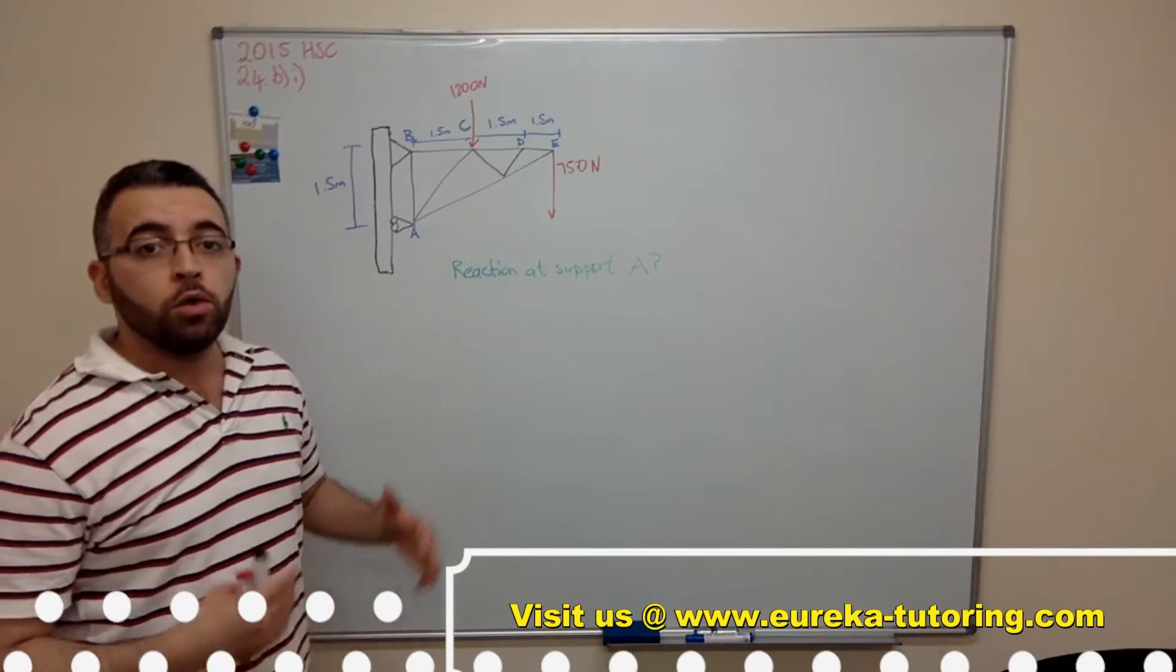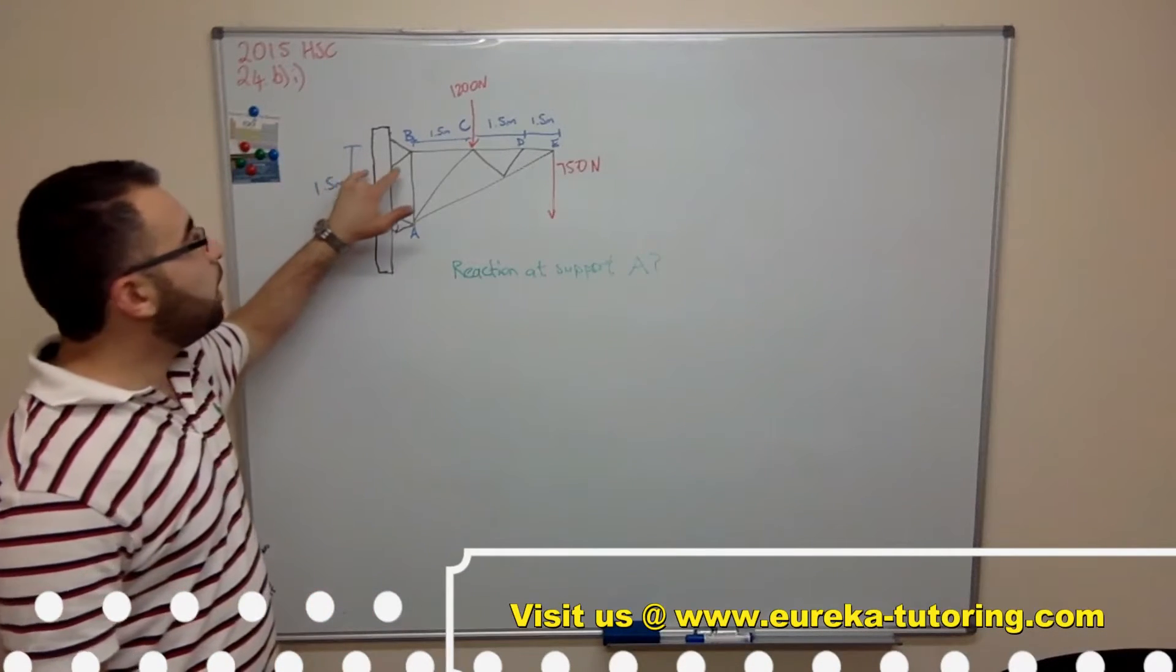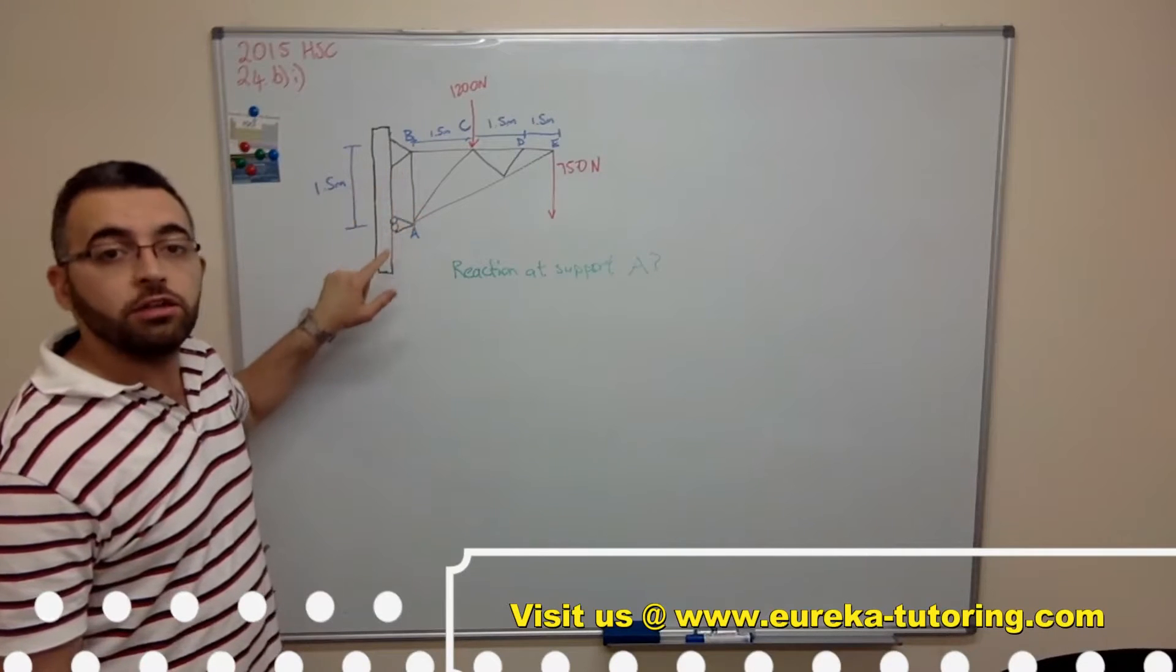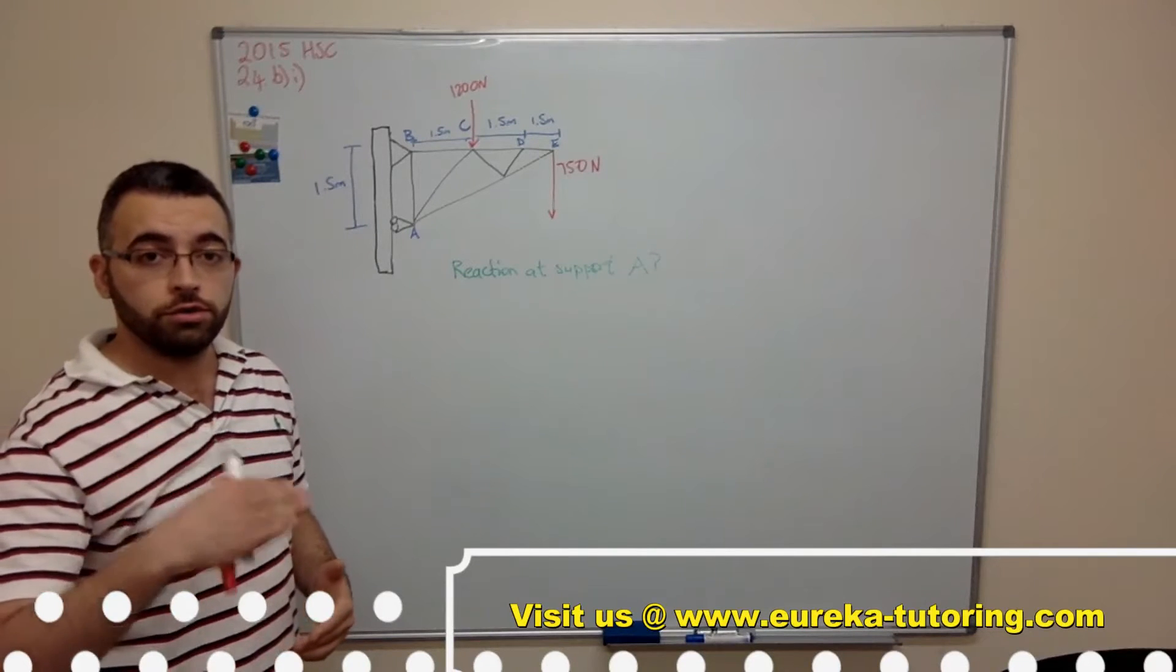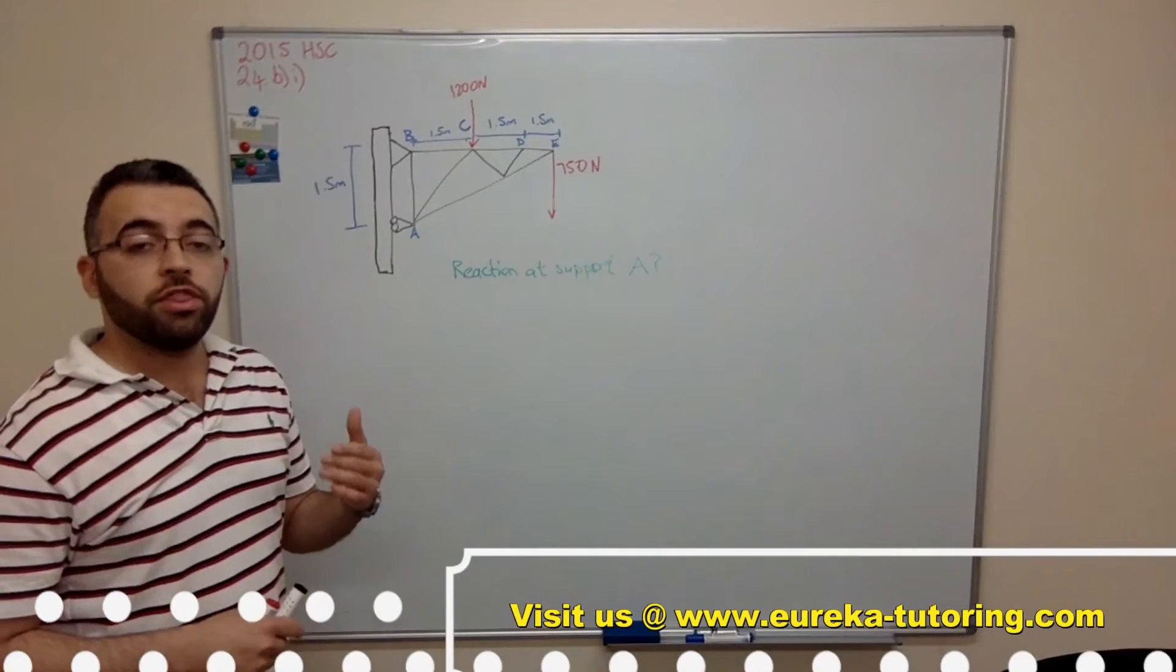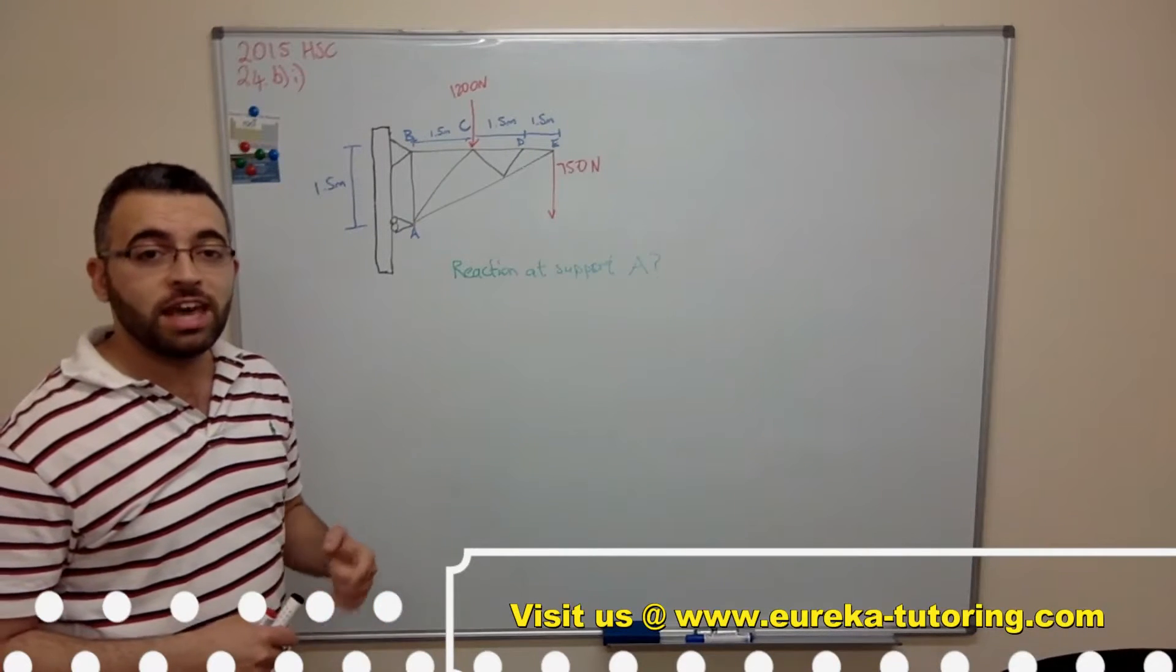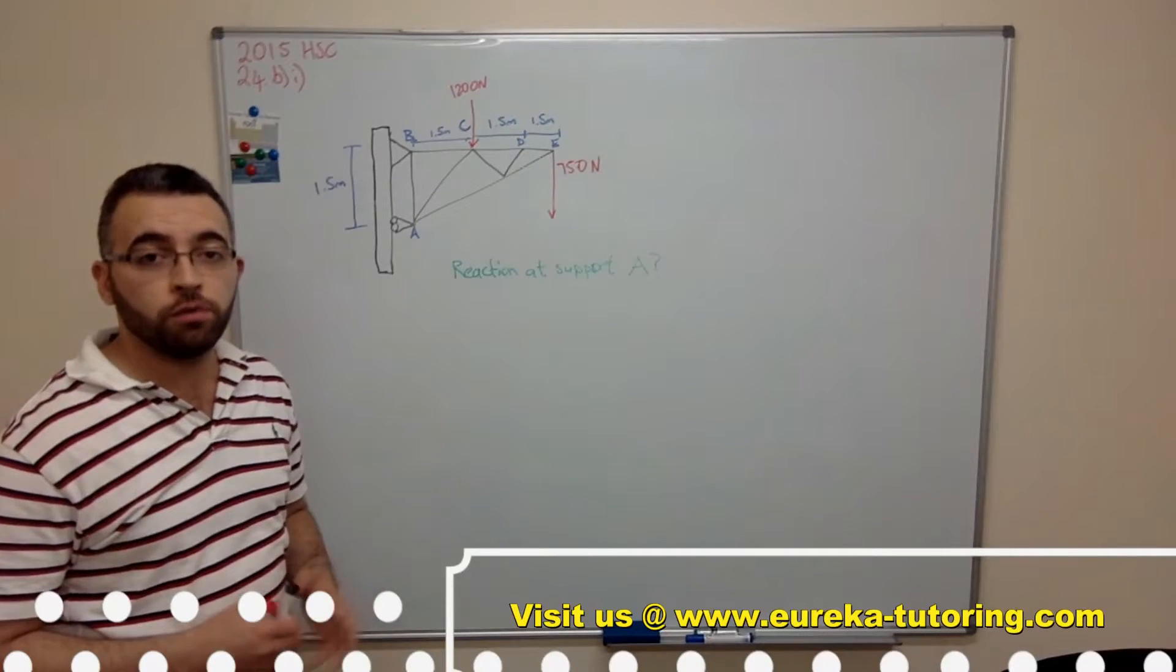Now when we look at the diagram we look at joint B which is a pin joint and joint A which is a roller joint. Now with a pin joint we know that there are two forces, horizontal and vertical. With the roller joint there is a force that acts perpendicular to the surface of the roller joint.